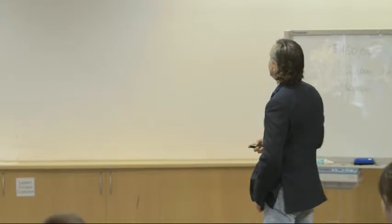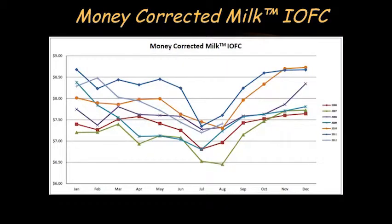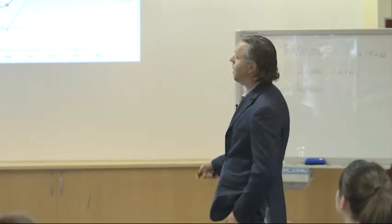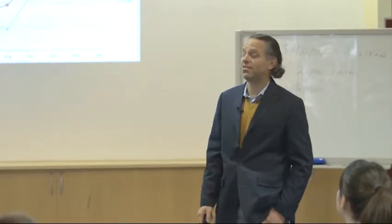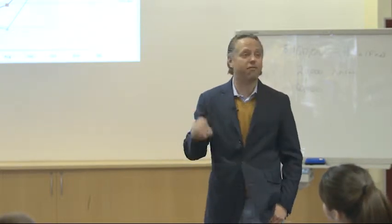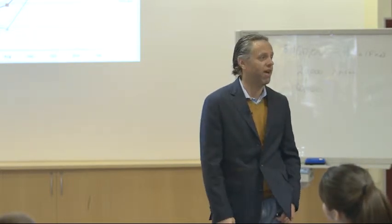What I do is generate a graph like this, where I fix those market factors. I fix all the milk price indicators and I fix the feed price indicator, and I end up with a static income over feed cost — static meaning I fix those market factors.